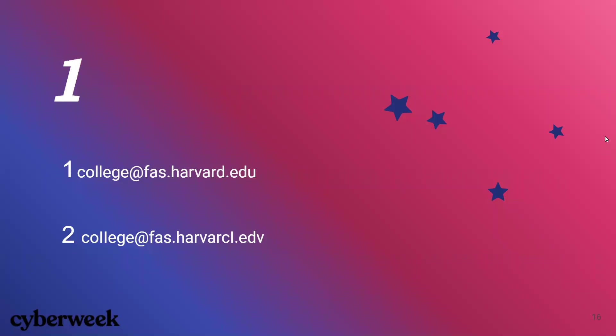So the first email and the second email — which one do you think is the right one? The correct one is the first one: college@fas.harvard.edu. The second one is unfortunately wrong because you can see that Harvard is not spelled correctly, and the .edu is actually .edv.